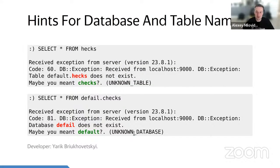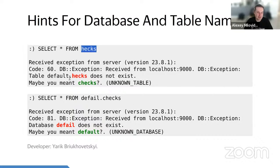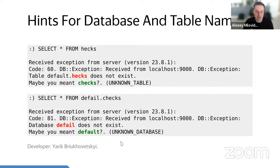Much more useful for usability: automatic suggestions to correct misspellings in table and database names. If you misspell a table like 'hex' instead of 'checks', it will tell you 'hex doesn't exist, maybe checks?' If you have a typo in the database name like 'default', you'll get a suggestion. We already had this feature for function names, data type names, aggregate function names, and table function names — but now also for tables and databases.